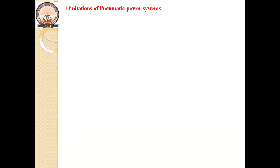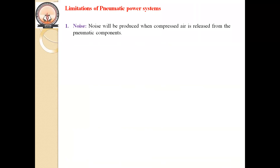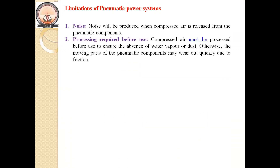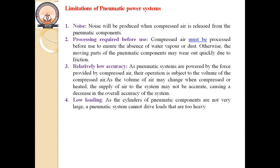Pneumatic systems also have some limitations. The first is noise — noise is produced during the compression stage. The second is processing required before use — air may contain unwanted particles that must be removed before entering the compressor. The third is relatively low accuracy — compared to hydraulic systems, accuracy is lower because the pressure of air keeps varying.